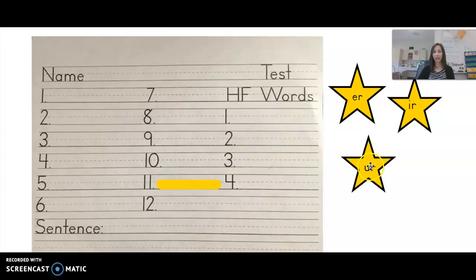All right, moving on to eleven. Eleven and twelve will be the least common spelling of the UR sound, so we are on to UR. Number eleven is fur. Fur. The dog has a lot of fur. And number twelve, turn. Turn. Can you turn around so I can say hi? Turn.